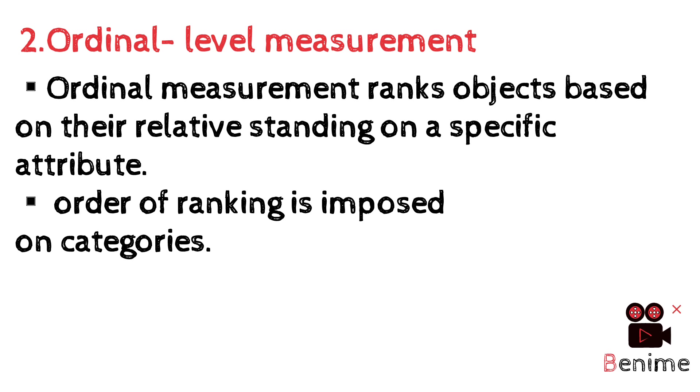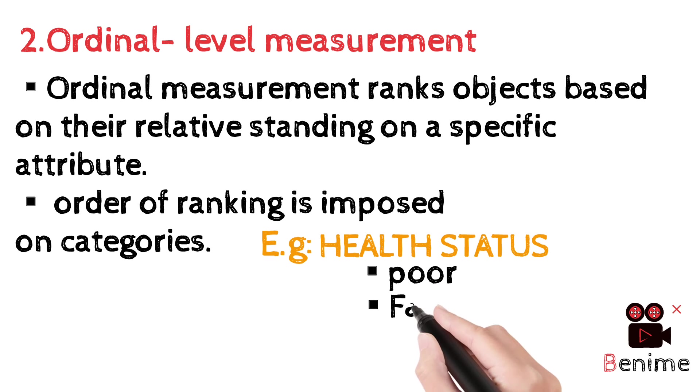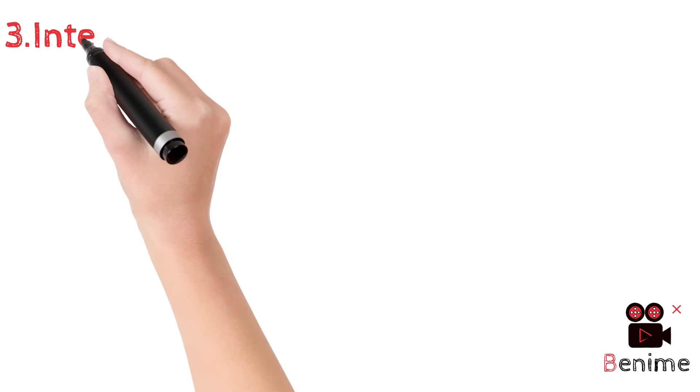Here we see the example, health status. In this health status, how we rank the object? Poor, fair, good and excellent. This is the ordinal level measurement.